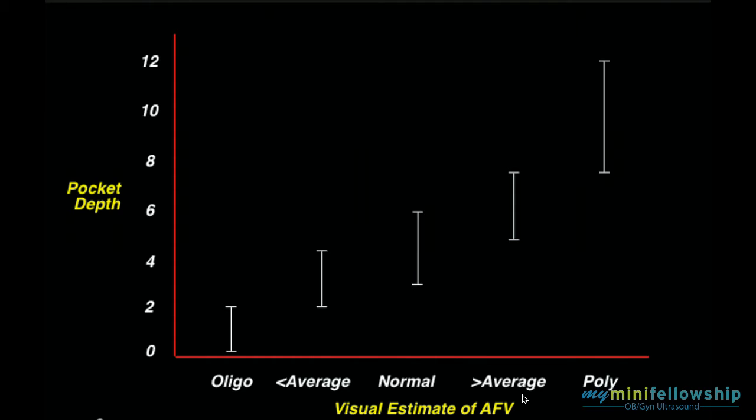As I said three months later, we came back and measured the deepest vertical pocket, according to the rules that Manning set up, and we made this graph. And when I saw that graph, I was rather taken aback, because in fact, there was a virtual linear relationship between the deepest vertical pocket and our visual estimate of amniotic fluid.